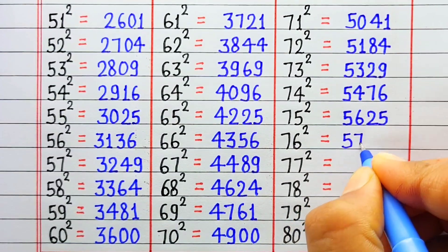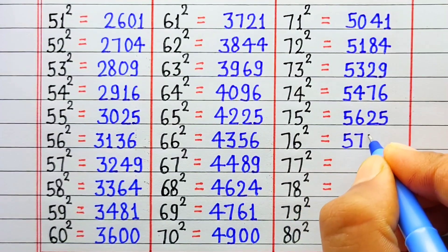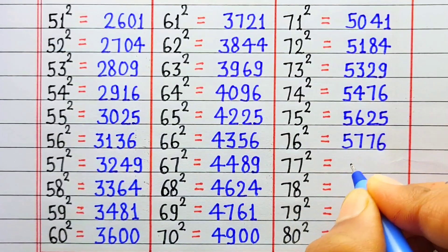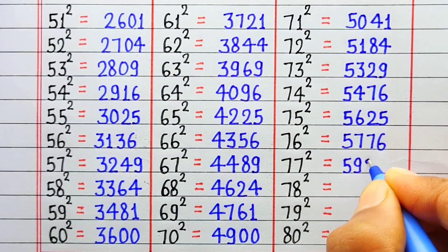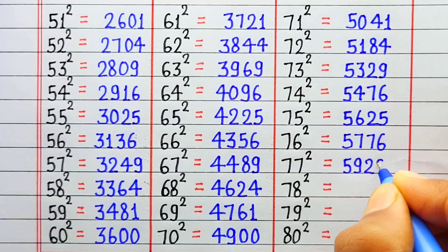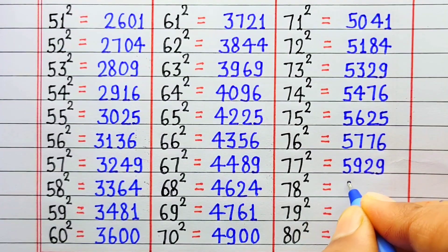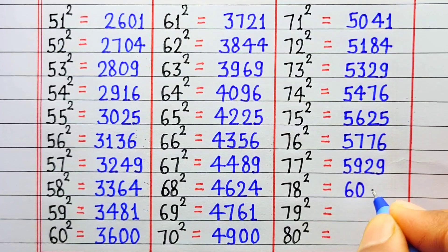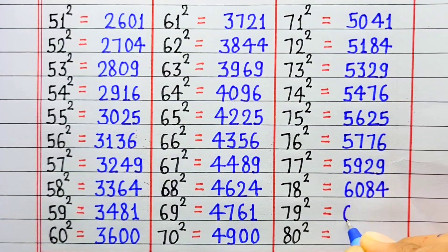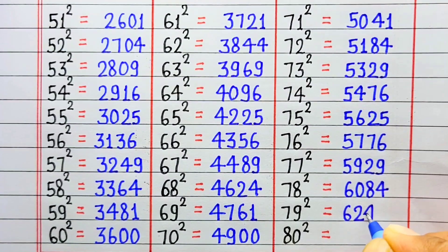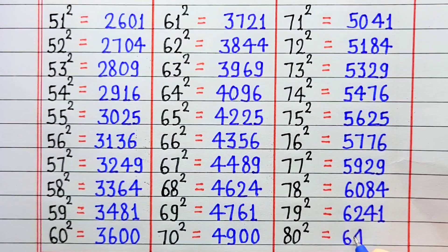Square of 76 is 5776. Square of 77 is 5929. Square of 78 is 6084. Square of 79 is 6241. Square of 80 is 6400.